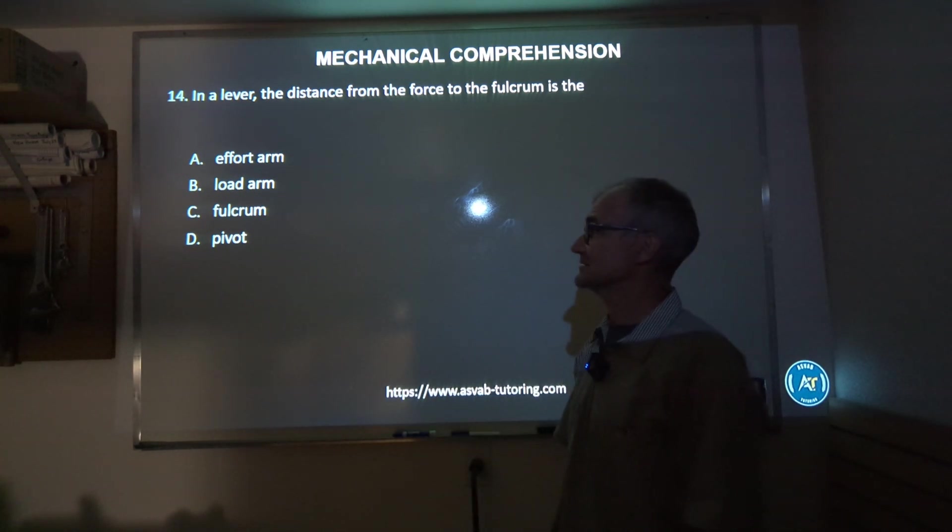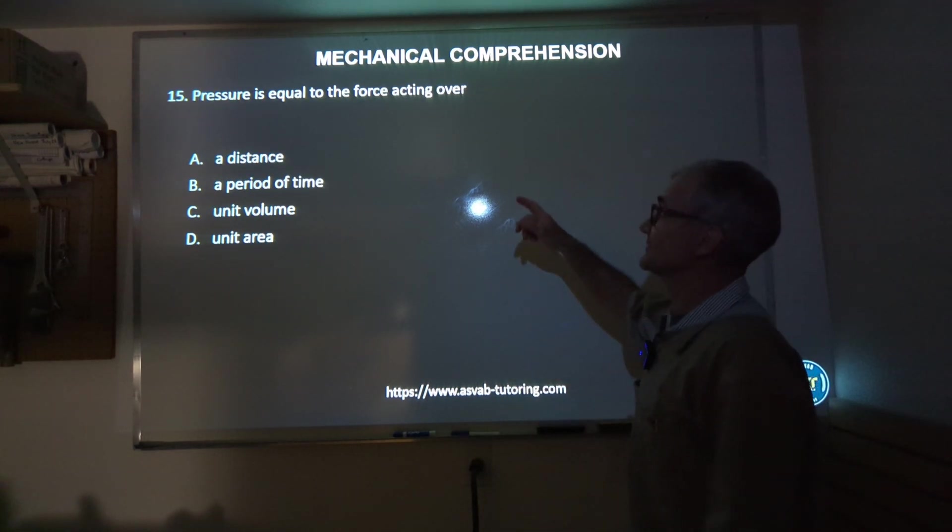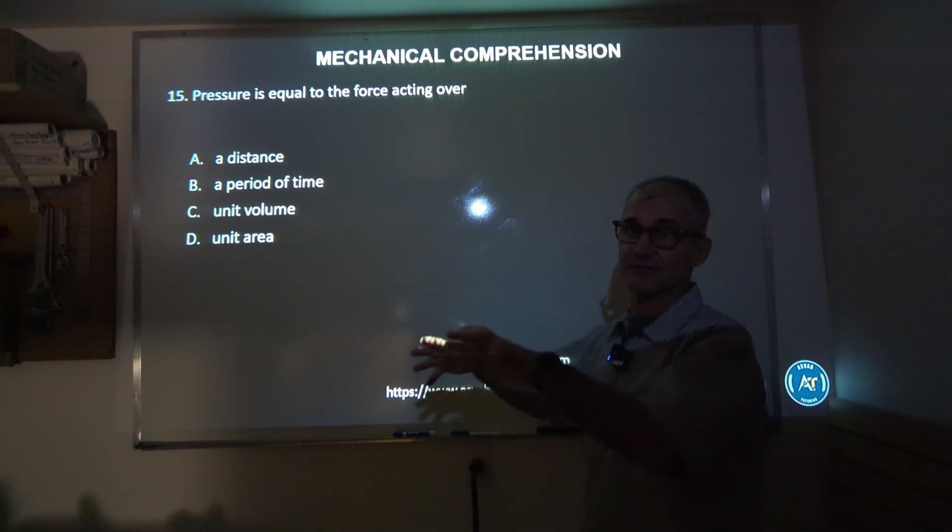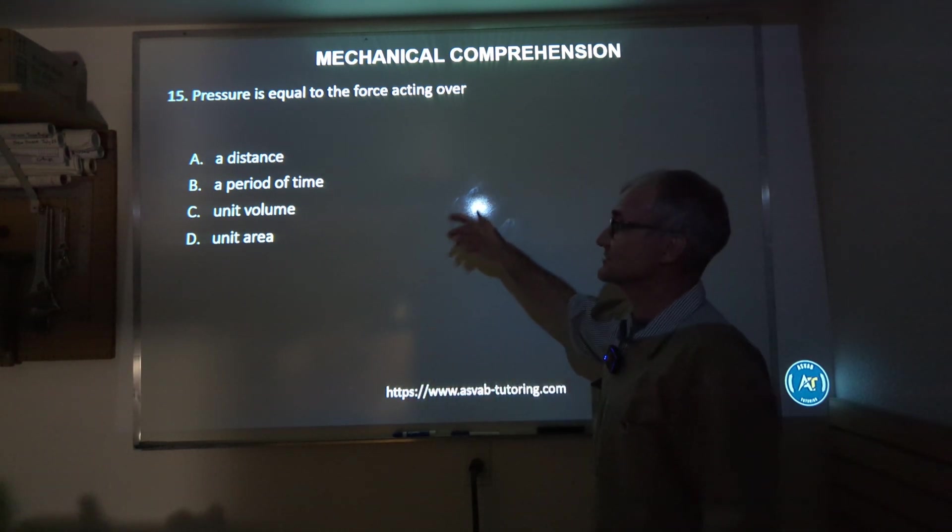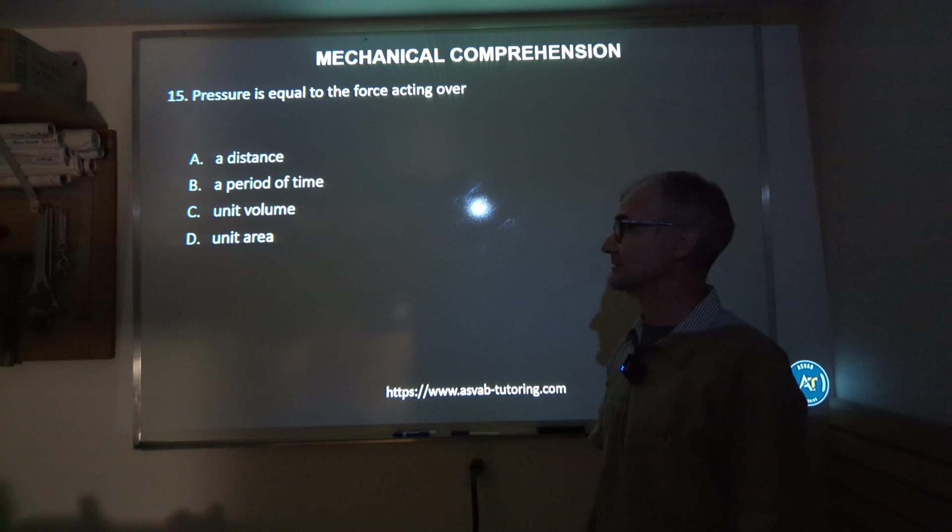Again, the angular velocity problem. Number 15: pressure is equal to the force acting over. Well, if you think about pressure like air pressure in your air compressor, it's going to be in pounds per square inch, just going to be amount of force over a unit area. So the correct answer is going to be D, unit area, like pounds per square inch.